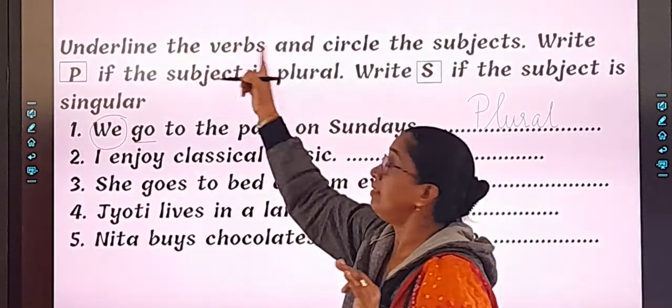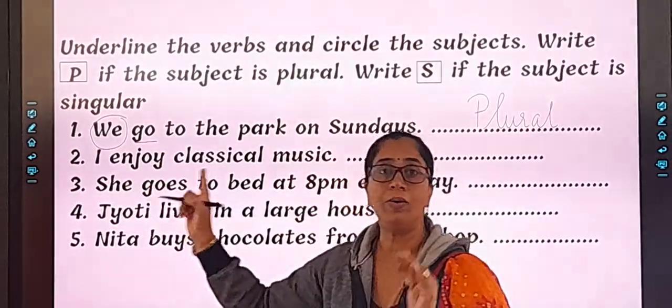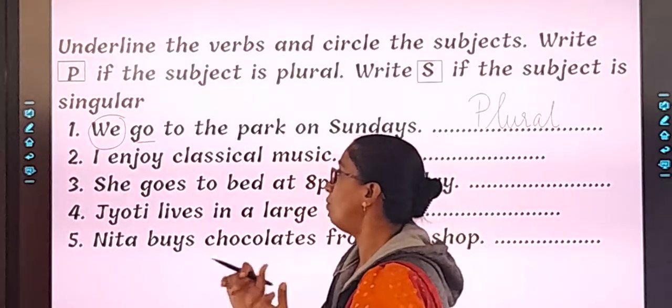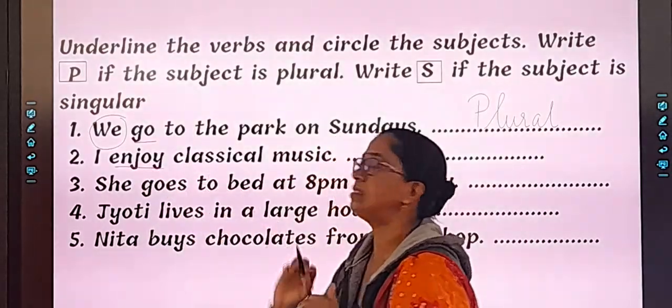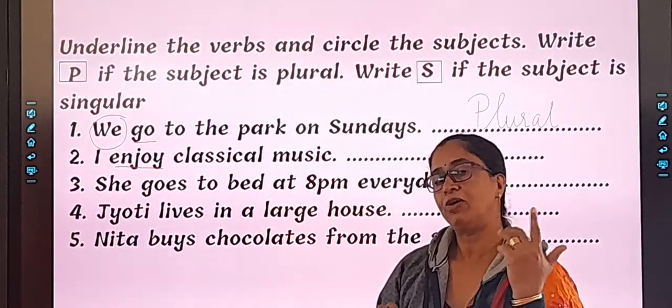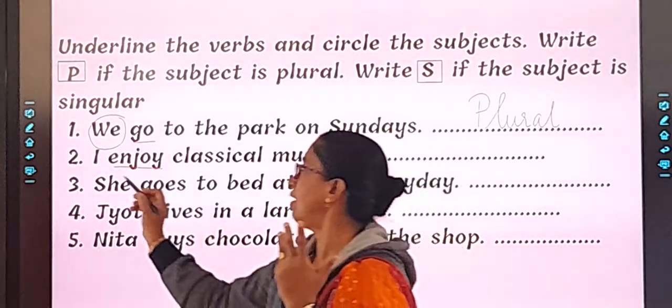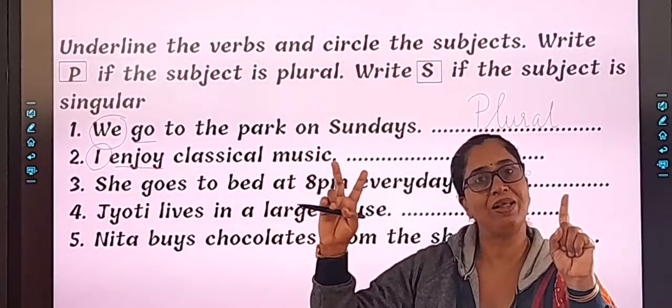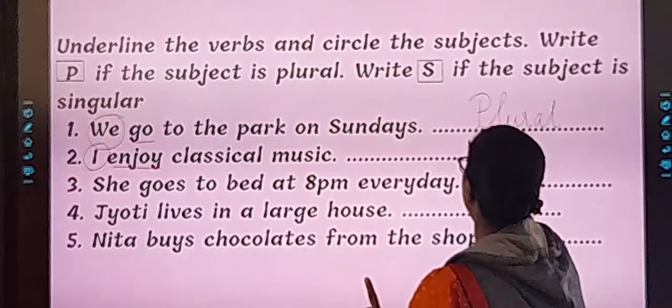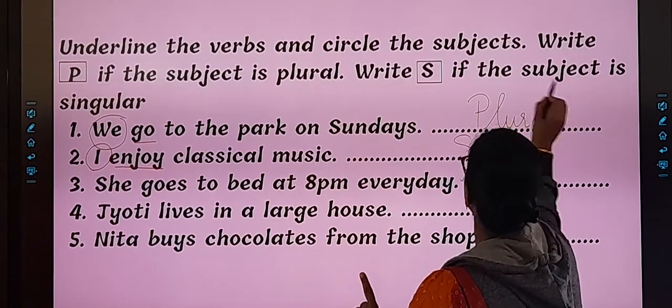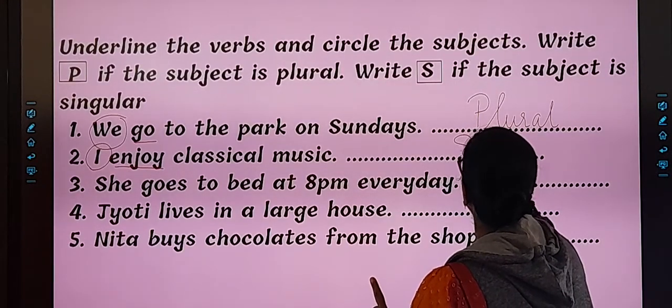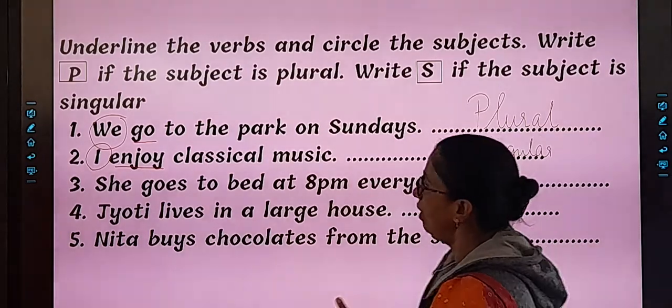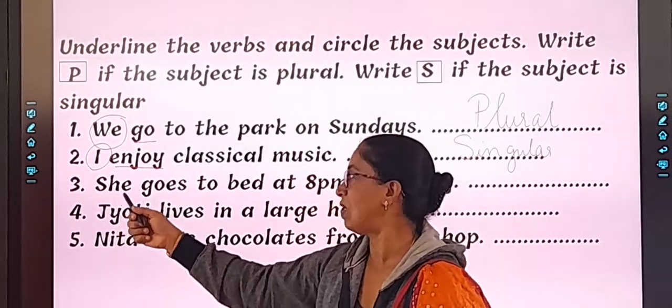Second one. Underline the verbs. So what is a verb? What is action? I enjoy. So what do I do? I enjoy. What action? Enjoy. So action, verb is enjoy. We are talking about - who are we talking about in this sentence? I. So I is the subject. I is singular or plural? It is singular. So you will put S, singular letter S. Or you can write the full spelling, S-I-N-G-U-L-A-R. Okay? Let's do the next one on your own. Come on.